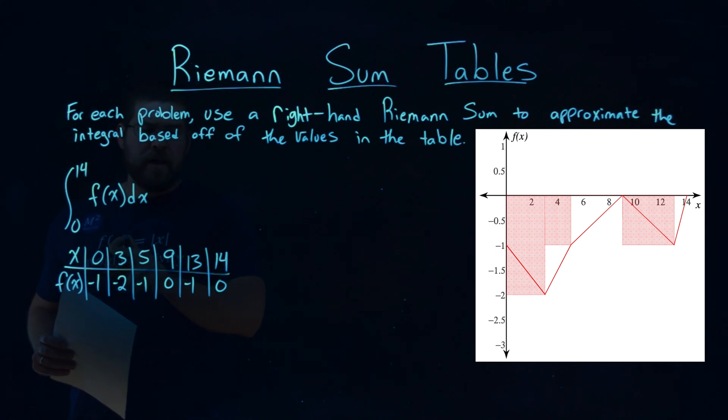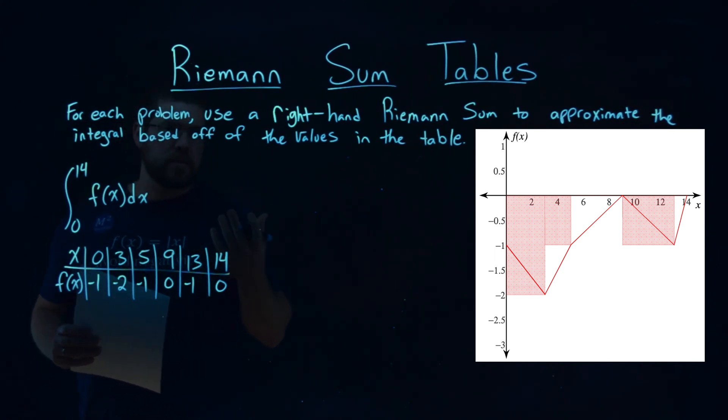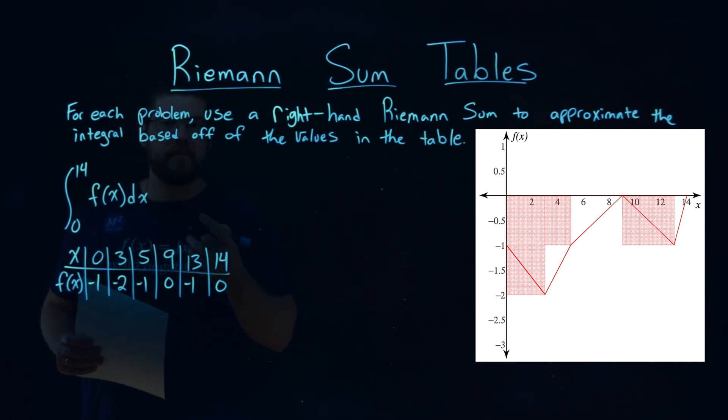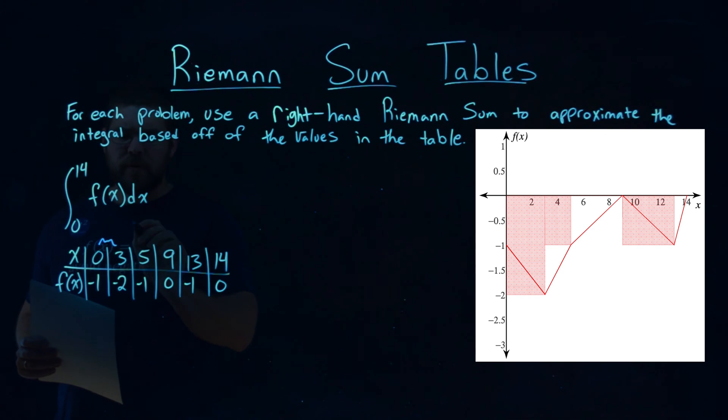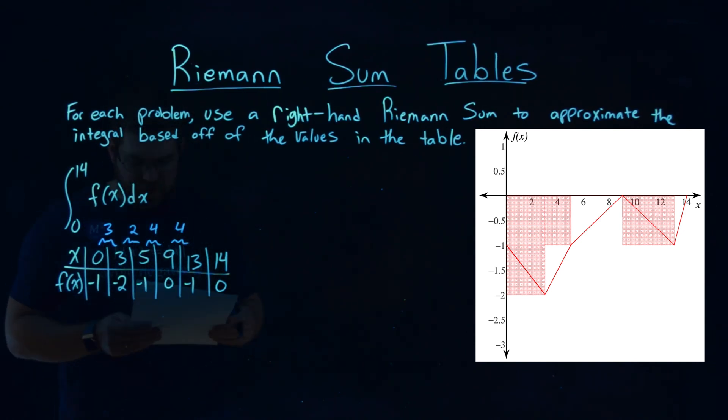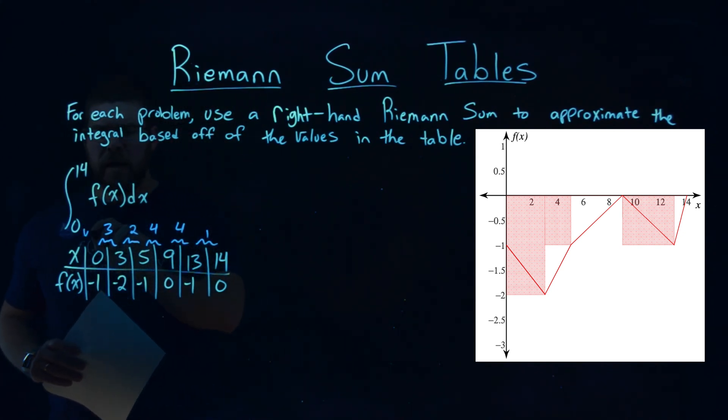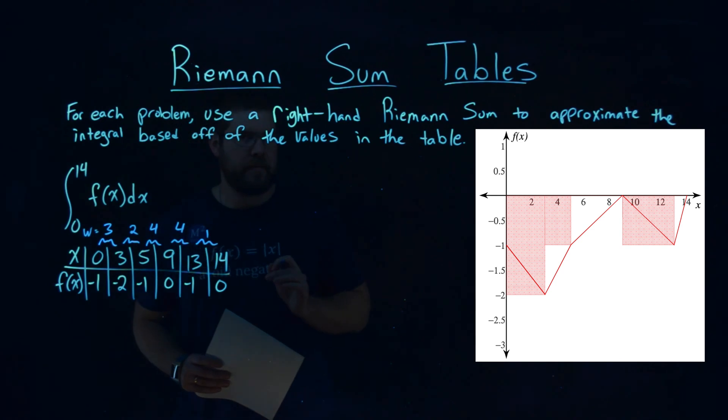Right here, these x values will represent the base parts of each rectangle. So I want to find the width of each rectangle, the distance between each x value. The difference between 0 and 3 is 3, and between 3 and 5 is 2. Between 5 and 9 gives me 4. Between 9 and 13, we have another 4 as well, and 13 to 14, we have 1. These represent the widths that we'll be dealing with.